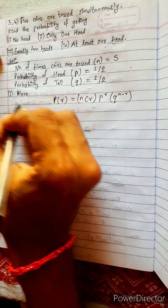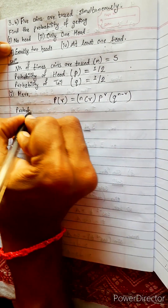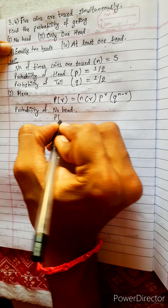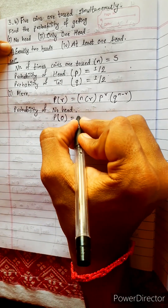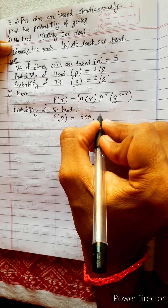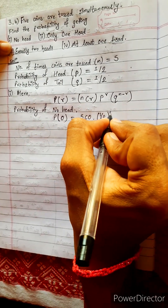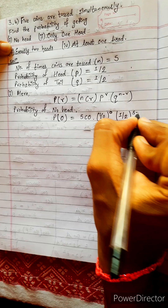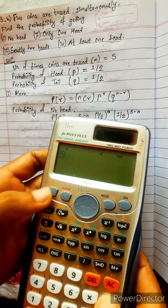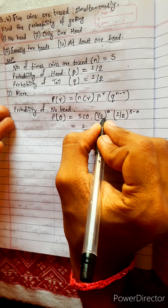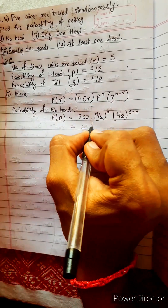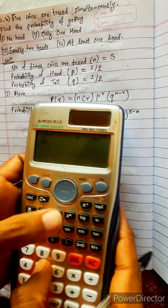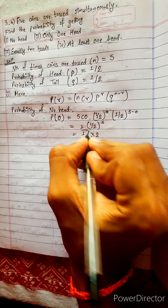Problem one: probability of no head means probability of zero heads. P(0) = 5C0 × (1/2)^0 × (1/2)^(5−0). Now 5C0 equals 1, (1/2)^0 equals 1, and (1/2)^5 equals 1/32. So the probability of no heads is 1/32.